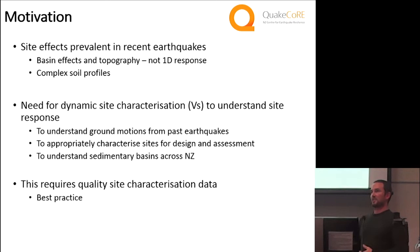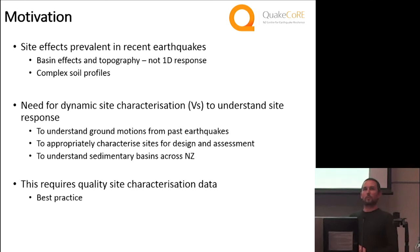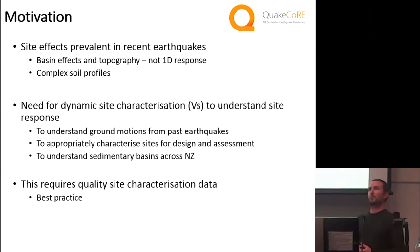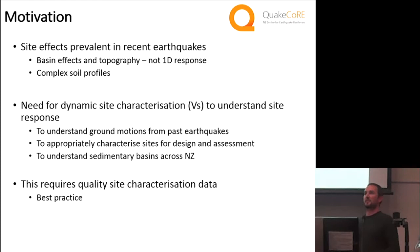If we want to do a really robust job in terms of site classification, what dictates our site response and site amplification is effectively the stiffness of that soil column. So we need to be doing dynamic site characterisation — we need to be characterising shear wave velocity. If we're not measuring shear wave velocity, we're not pushing forward in terms of our classification approach. We can use that to understand the ground motions of past earthquakes and improve our design assessment, and a key aspect of all of that is sedimentary basins and their effect on ground motion, as we've seen in previous events. This all comes back to requiring high quality site characterisation data.